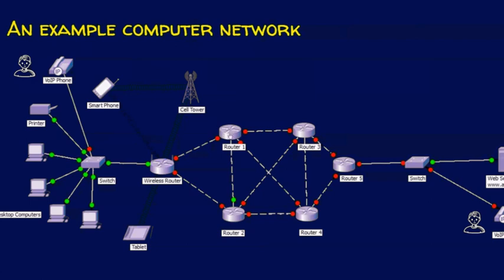When a router experiences two different kinds of data at the same time, it should be able to know which data to give priority to — this is what we call quality of service. The main aspects of quality of service are that it handles loss and also handles delay.